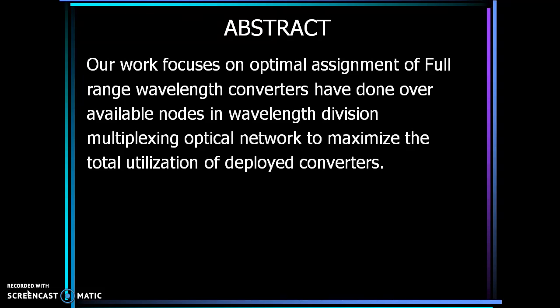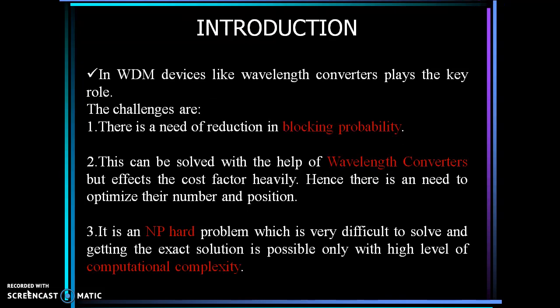In WDM network, devices like wavelength converters play a prominent role since they reduce blocking probability. But the cost of such devices is maximum.